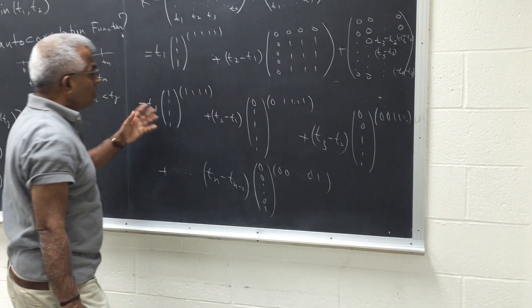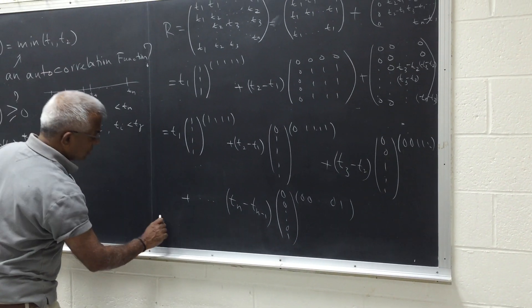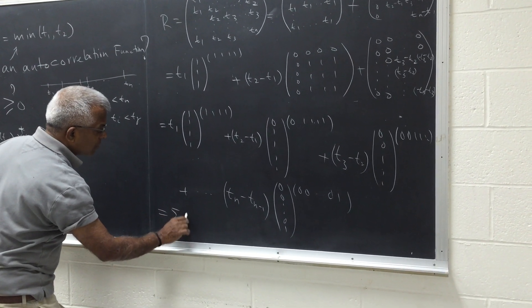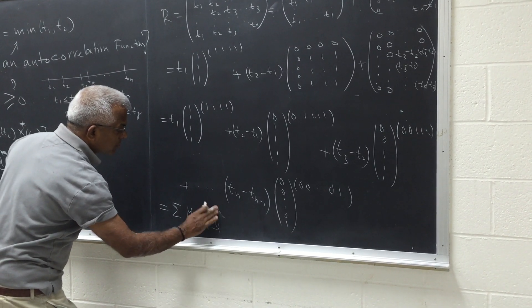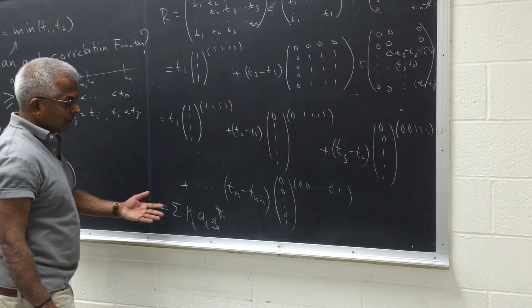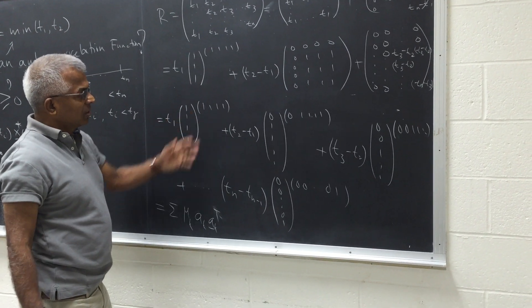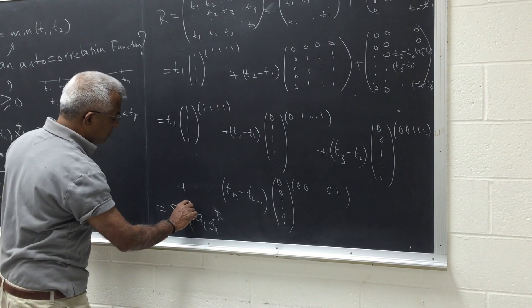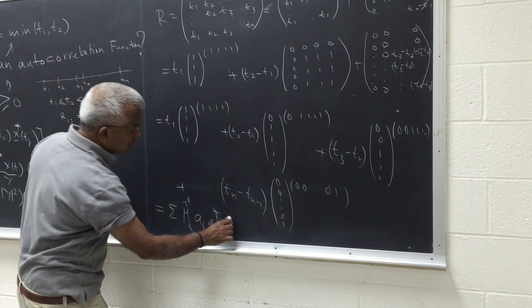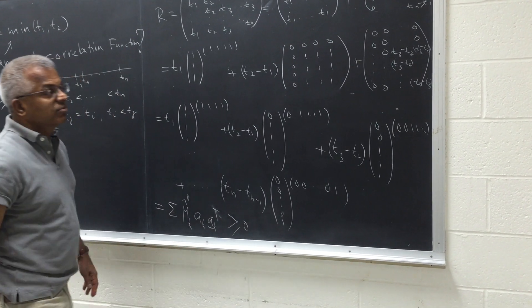Now what? Notice that of course we are able to write this as sigma, some mu k, a k, a k transpose. Where, so each of this is a rank one and non-negative definite. Mu k's are all positive. That's the key. So the whole thing is a non-negative definite.